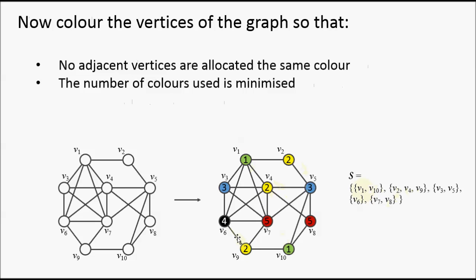You may also see people using color labels instead of colors themselves. So for example here, yellow has been given the label 2, blue has been given the label 3, and so on. But it means the same thing.